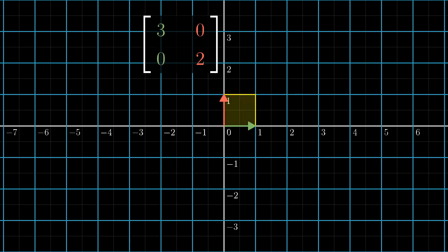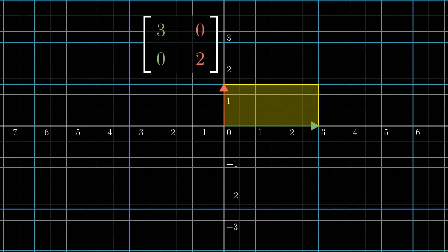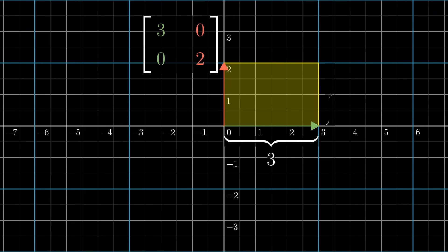Now, if we focus our attention on the 1 by 1 square whose bottom sits on i-hat and whose left side sits on j-hat, after the transformation, this turns into a 2 by 3 rectangle. Since this region started out with area 1 and ended up with area 6, we can say the linear transformation has scaled its area by a factor of 6.